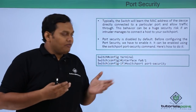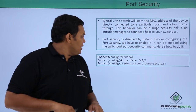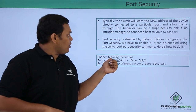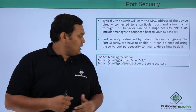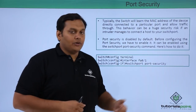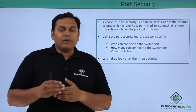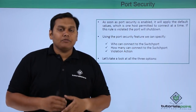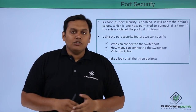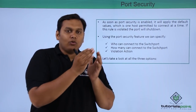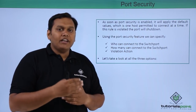Before configuring port security, we should enable it and know about who and what the violations are to the switch. To configure port security, enter switch configuration terminal mode, then enter interface FA0/1 into interface configuration mode, and use the command 'switchport port-security'. Port security is now enabled, and by default only one host is permitted to connect at a time. If the rule is violated — meaning any other host is connecting — then the port will automatically shut down according to the violation policy.